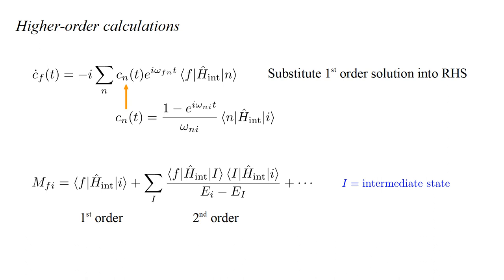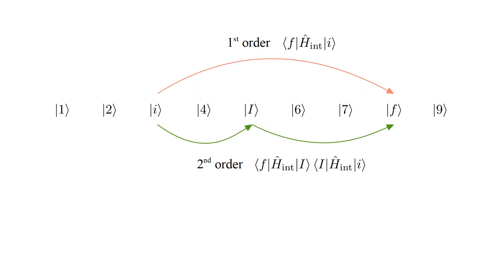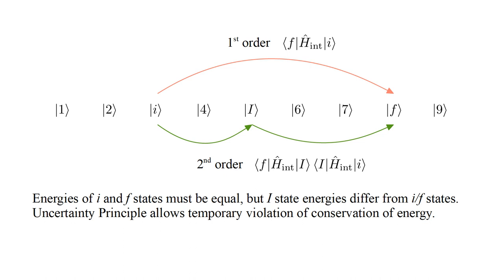Here we use summation variable capital I to emphasize the idea of intermediate states. Schematically, we can picture the stationary states of the unperturbed system arranged in a row. Then the first-order term represents a direct transition from initial to final state. Each term in the second-order correction represents a transition from initial to intermediate state, followed by a transition from intermediate to final state. If the matrix elements of the interaction Hamiltonian are small, then these second-order terms will be much smaller than the first-order term. Assuming the system spends a long time in the initial state, followed by a long time in the final state, there is no uncertainty principle wiggle room for these energies, and the initial and final energies must be equal. However, intermediate states are occupied only temporarily, so the uncertainty principle allows those energies to differ from the initial and final energy.